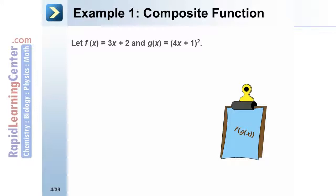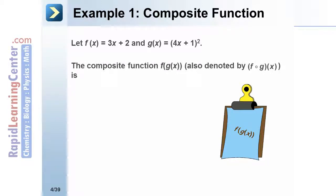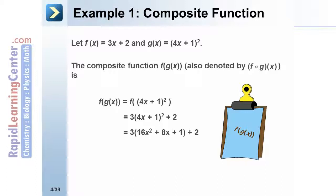Let's look at an example of a composite function. Let's say f of x is the function 3x plus 2, and g of x is the function the quantity 4x plus 1, squared. If we are asked to find f of g of x, we take g of x, which is the quantity 4x plus 1 squared, and replace it wherever we see an x in f. We use algebra to expand and simplify, getting f of g of x equals 48x squared plus 24x plus 3 plus 2, which becomes 48x squared plus 24x plus 5.